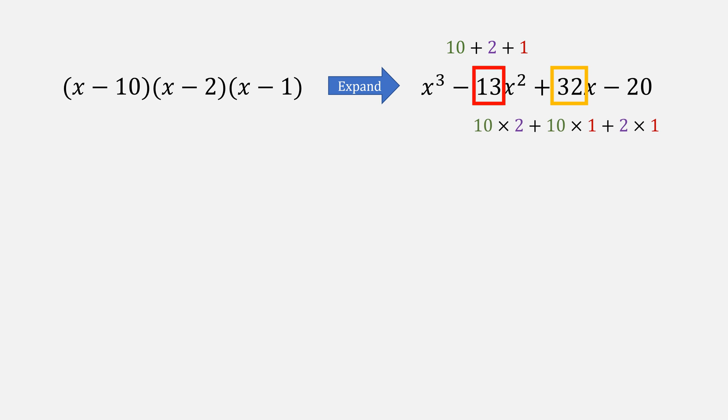32 has another relation, it is every pair of roots multiplied together and then added. The final number, 20, are all of our roots multiplied together.